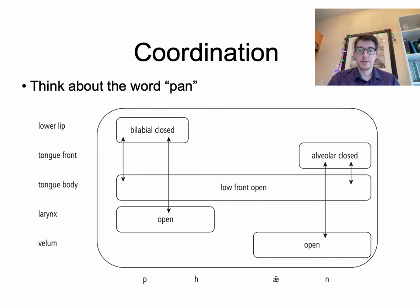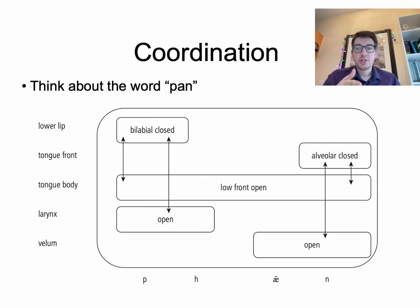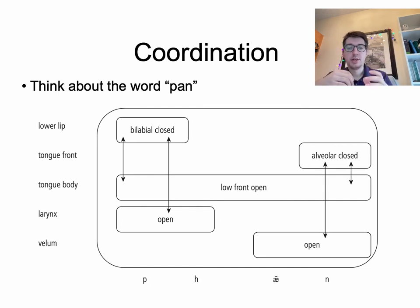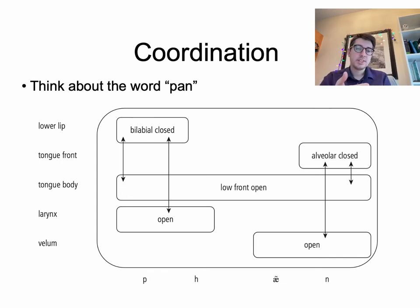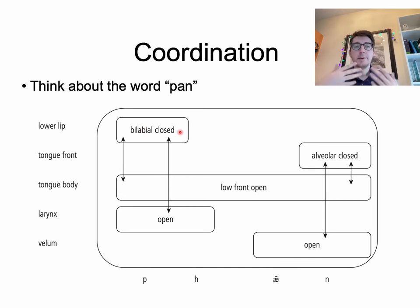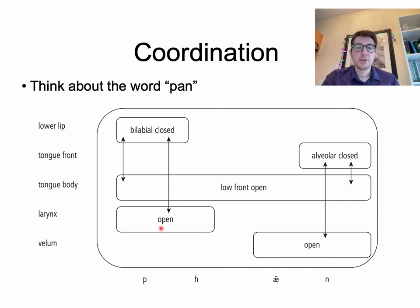Coordination between the dimensions is vital. Here is a simplified version of the coordination of movements in the word 'pan,' which is aspirated. There is bilabial closing and larynx opening simultaneously. This is just a sketch taken from one of the books — bilabial closing is very important here, and larynx opening simply means the glottis is open because it's voiceless.